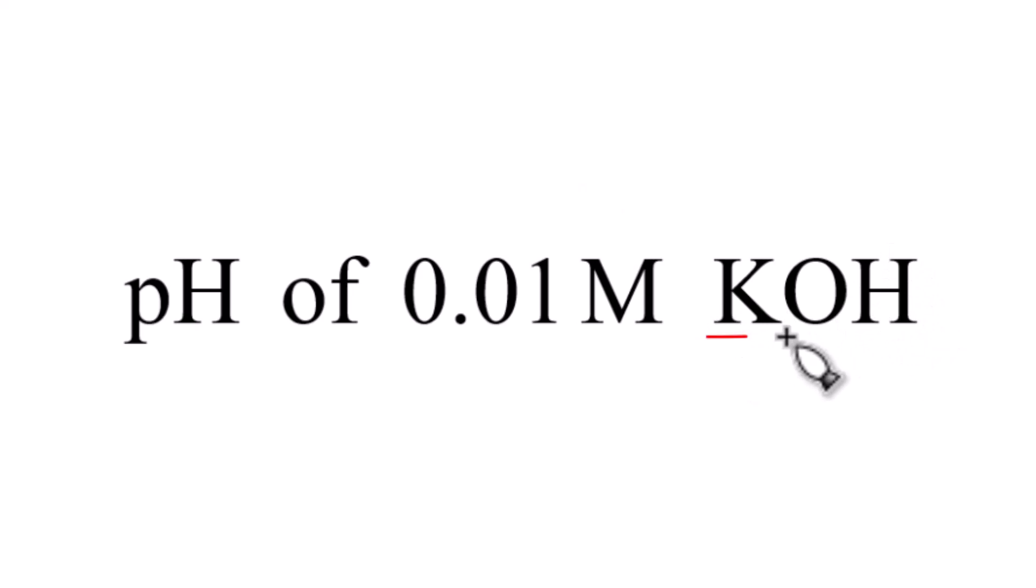We can tell that because we have a metal, potassium, and then we have this hydroxide polyatomic ion here, this OH. So we have potassium, that's one plus, it's in group one on the periodic table, then the hydroxide ion is a one minus. So you have to first recognize you have that strong base there.